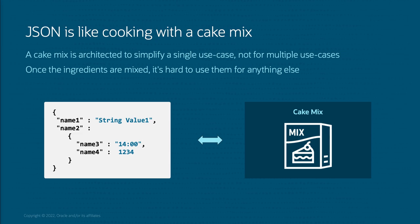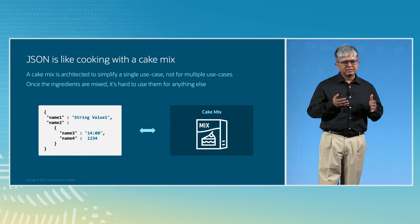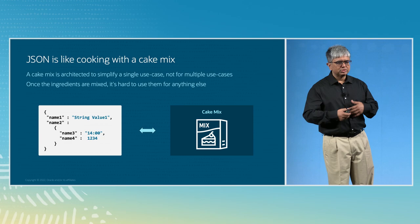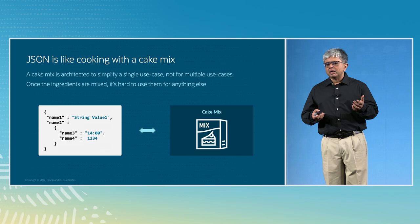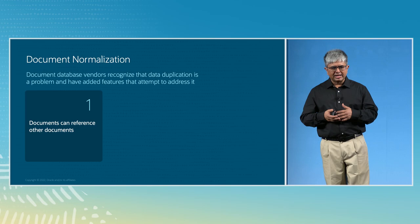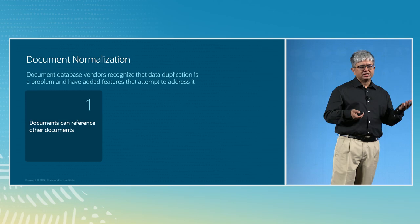JSON is like a cake mix — it's architected specifically for a single use case, not for multiple use cases. Once you mix the ingredients, you really can't use them for anything else. Document databases understand this problem and have added features to partially address it. For instance, documents can now reference other documents. Using references, you can normalize documents to remove duplication into little pieces, and document queries can aggregate data from multiple documents into a single result document.